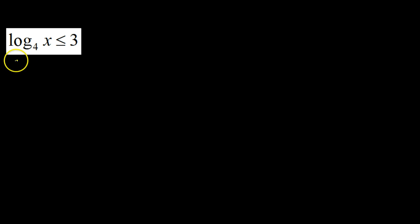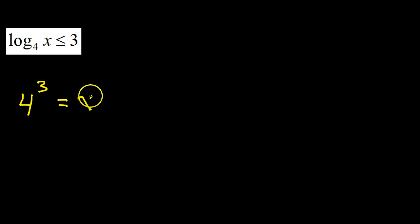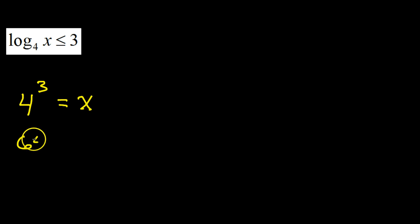Let me show you how to solve it if they did not give you the graph. If I want to rewrite this so x is by itself, I want to rewrite this in exponent form. In exponent form, you start with the base — so there's the base — and then the 3 is going to end up as the exponent. We're pretending this was an equation and not an inequality for now, so x is going to wind up over here. Of course, 4 to the third power is 64, so that gives us our critical value of x equals 64.